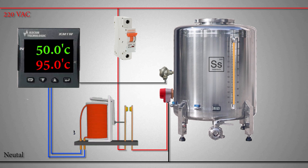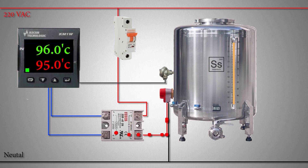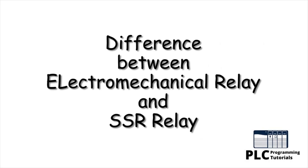Coming back to our tank heating example, we can replace the electromechanical relay with the solid state relay. As the temperature controller applies the control signal at the input of the SSR relay, the SSR relay triac starts to conduct electric current through terminals 1 and 2, and the heater turns on. The temperature in the tank gradually rises. As the temperature reaches the set point of 95 degrees, the SSR relay stops conducting the current. In this way, the temperature controller can regulate the temperature in the tank.